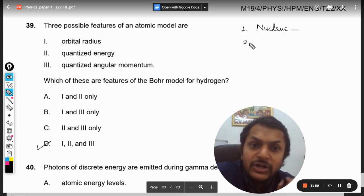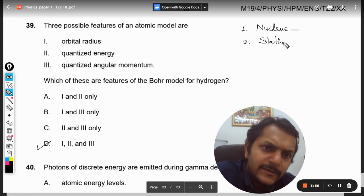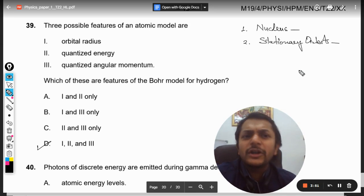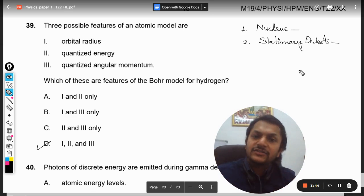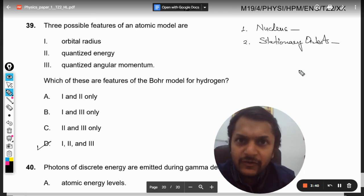This is not related to the question, that is why I'm not explaining it. Point number two is stationary orbits. Now stationary orbits, according to Bohr, are those orbits in which even if the electron is revolving, electron is getting accelerated, even then it is not emitting electromagnetic waves.